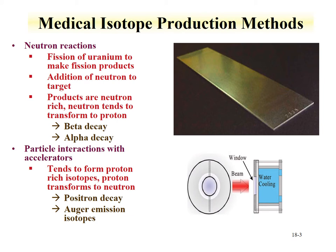Accelerators are often used to produce positron emitters, and they can also produce Auger emission type isotopes. These accelerators use a reaction where a target is interacted with a beam. The beam can be any sort of charged particle. Details such as cooling — either water or gas cooling — are necessary within the target, since nuclear reactions tend to be energetic and generate heat.